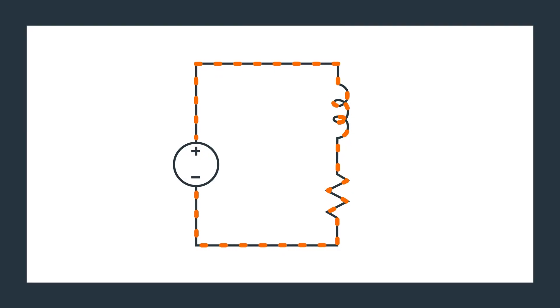So when you are doing DC analysis with an inductor, inductors, much like capacitors, are incredibly easy. You can treat an inductor like a short circuit. So you take the inductor out, put a wire there, and then act like it never existed.